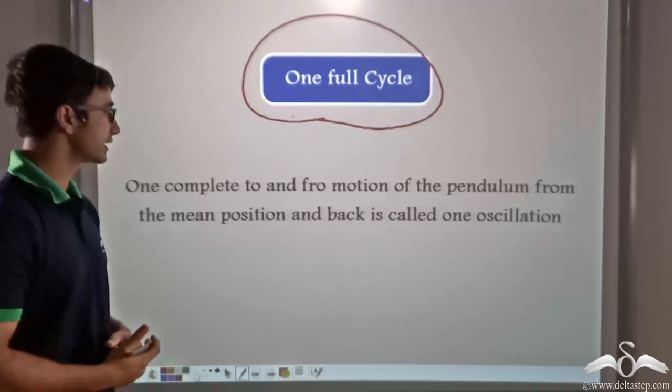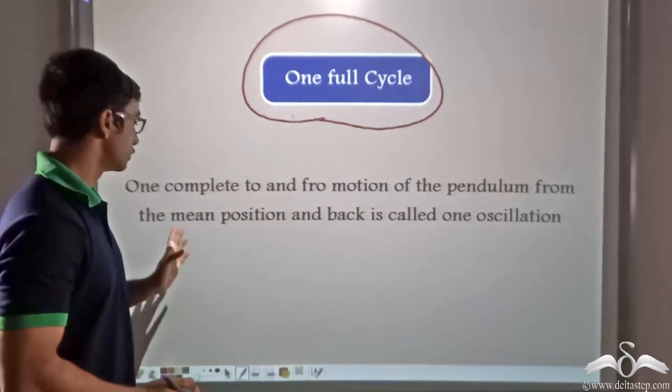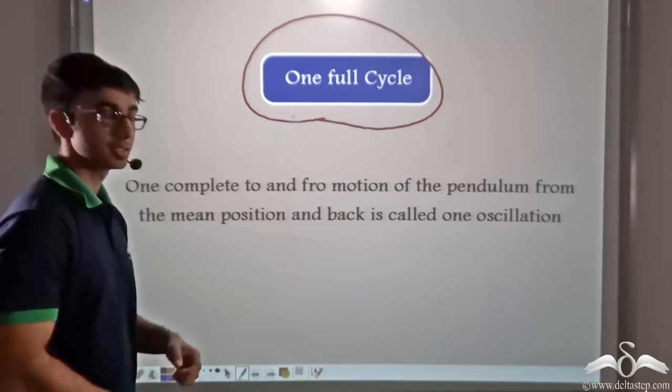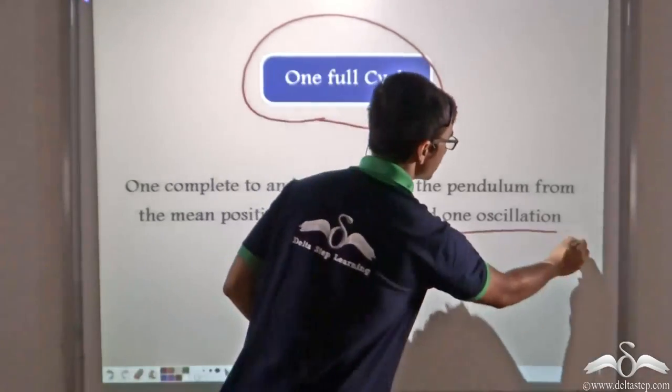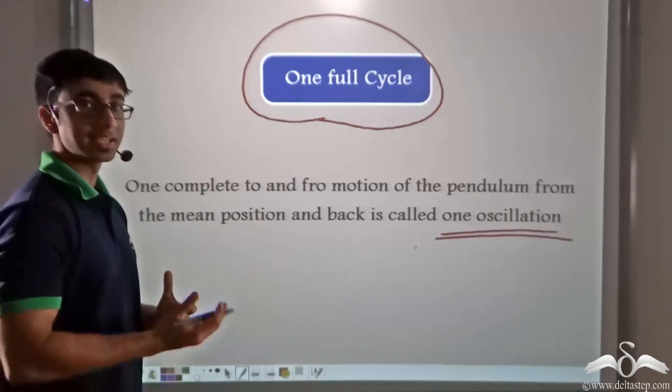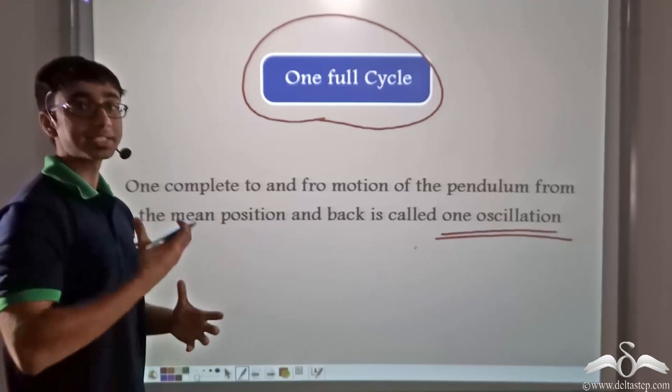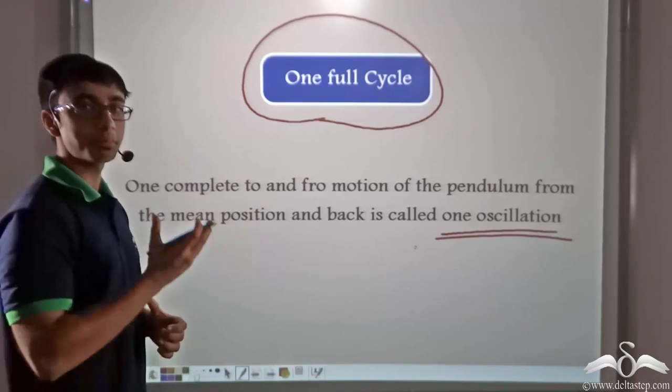How do we define one full cycle? One complete to and fro motion of the pendulum from the mean position and back is known as one oscillation or one full cycle. This gave us in those early times the concept of time and how it can be regulated with the help of a pendulum.